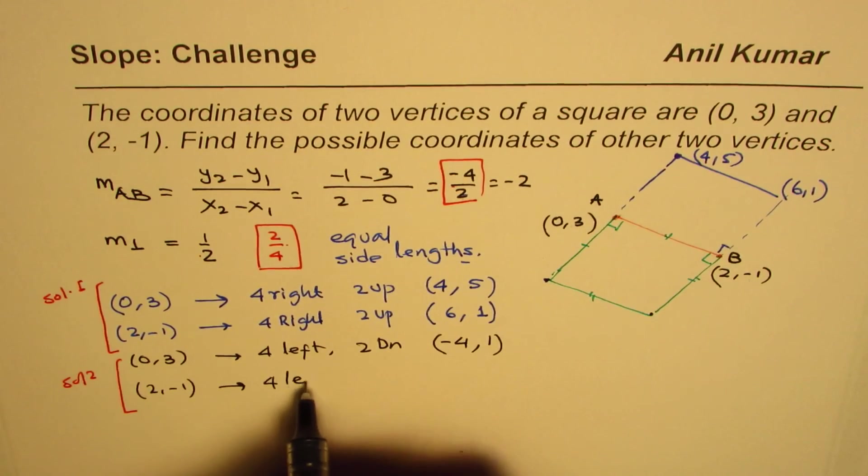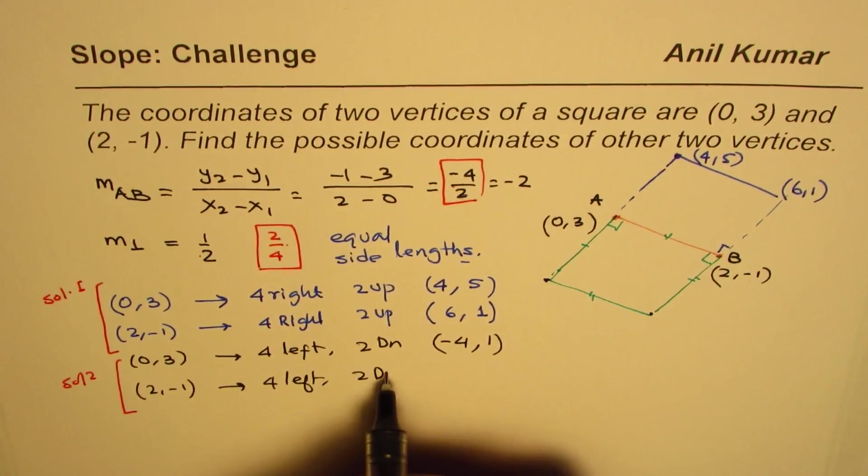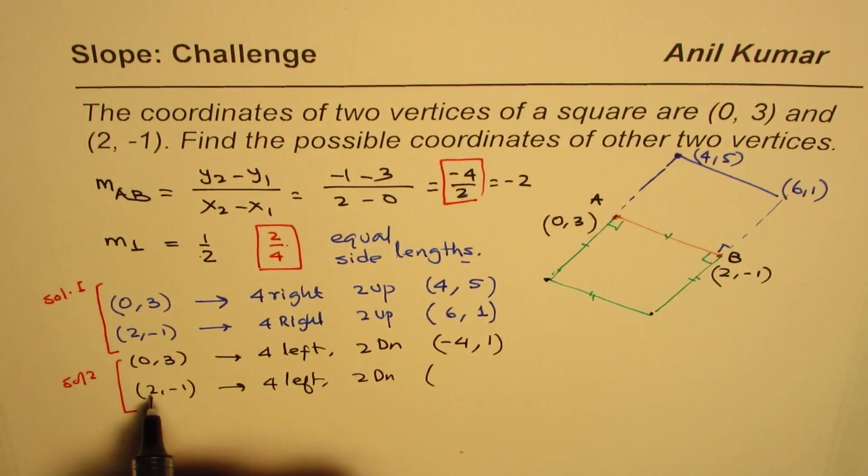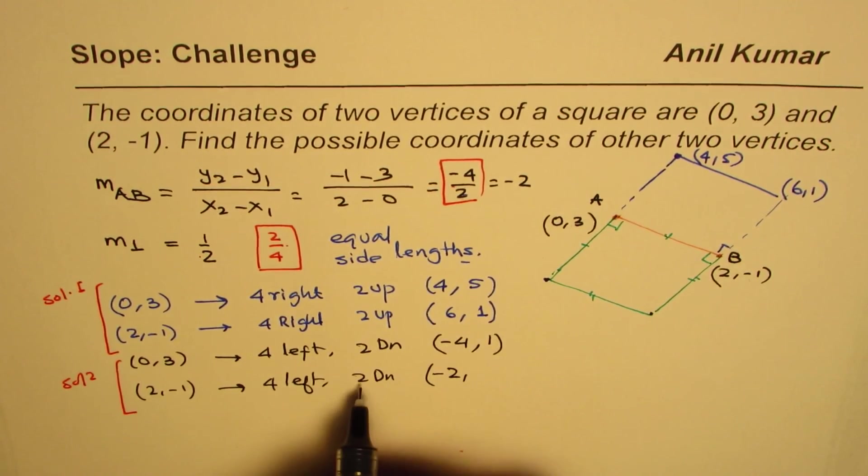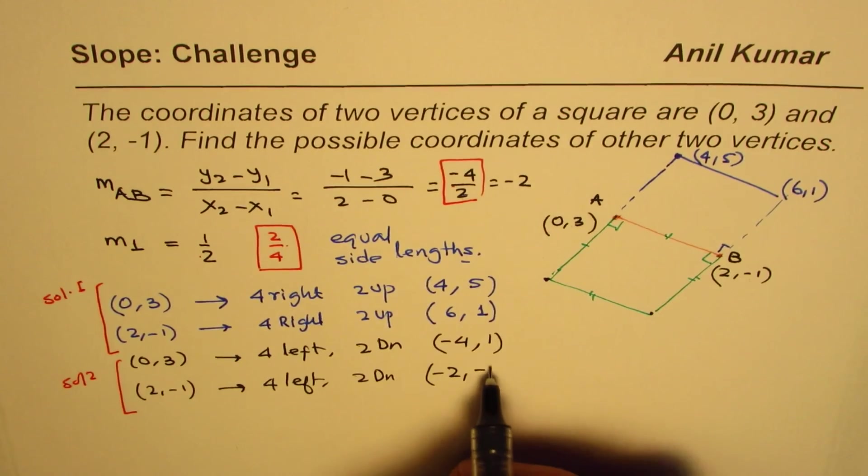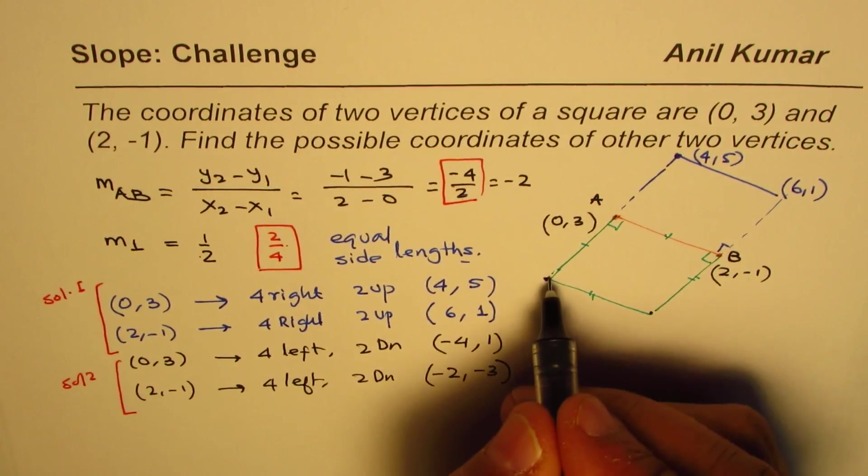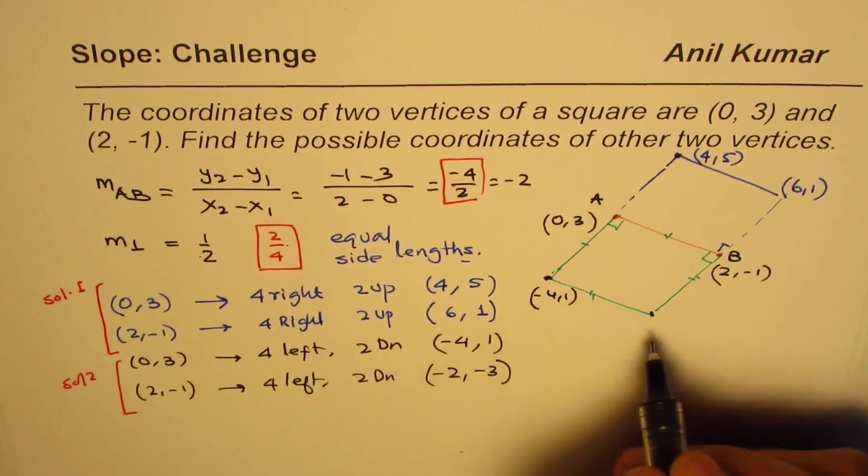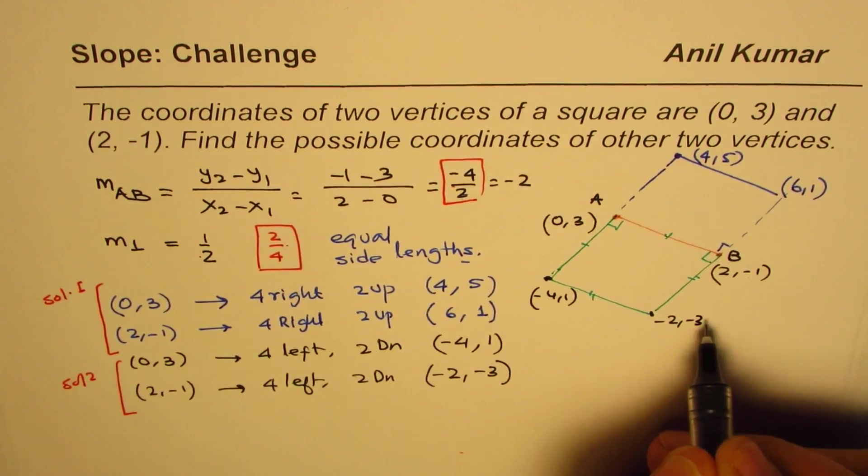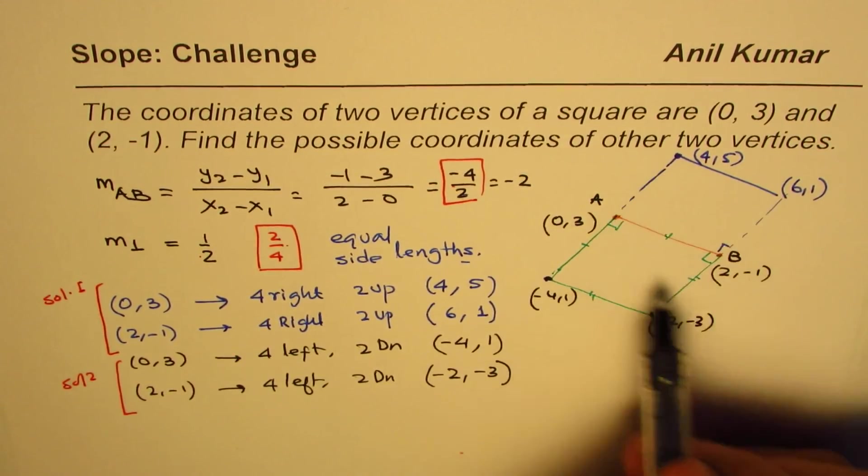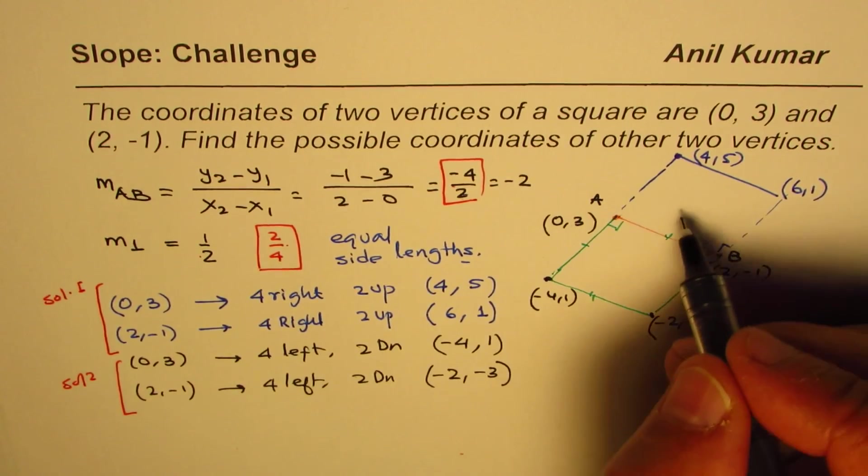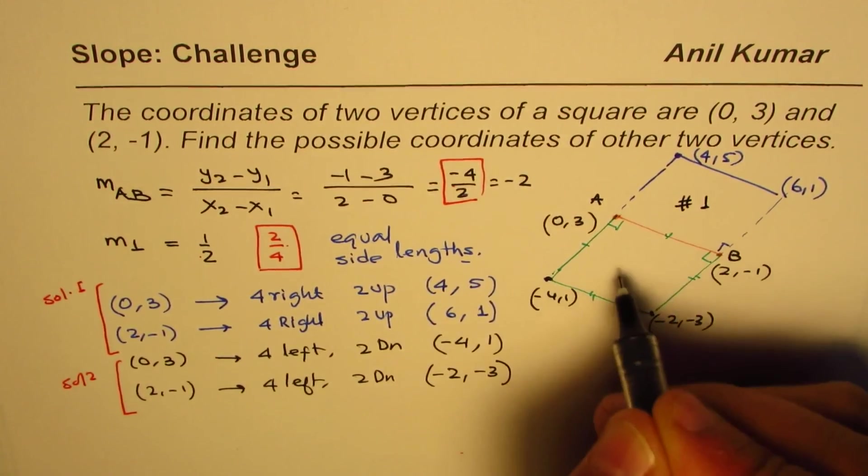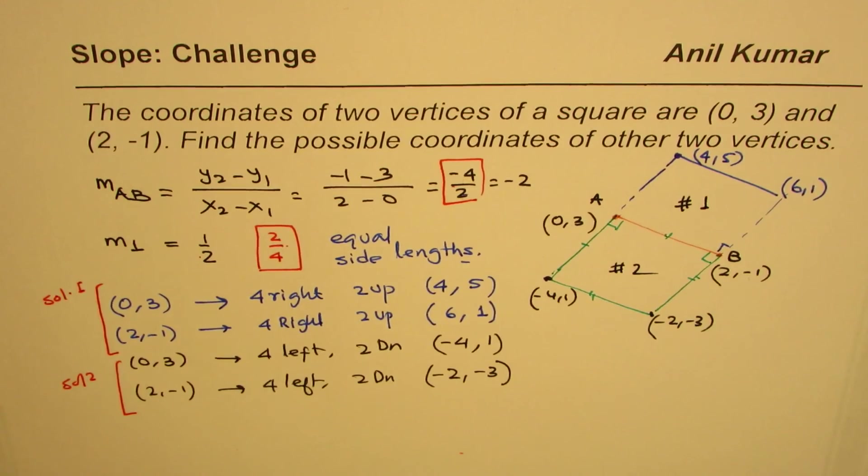Starting from (2, -1), going 4 left and 2 down means subtracting 4 from 2, giving -2, and subtracting 2 from -1, giving -3. So the coordinates are (-4, 1) and (-2, -3). This gives us two different squares with two different solutions.